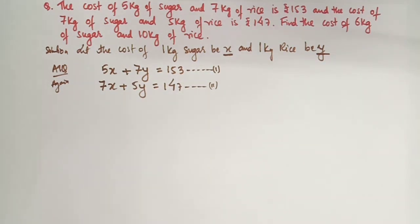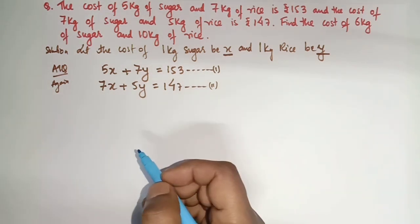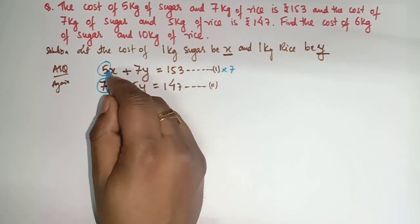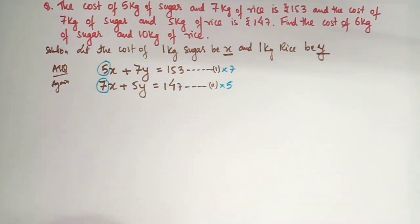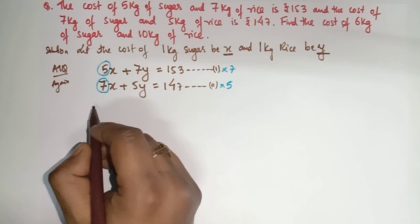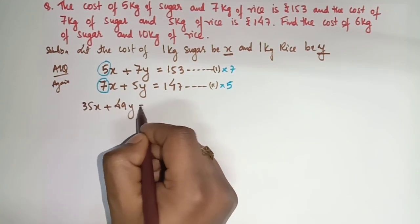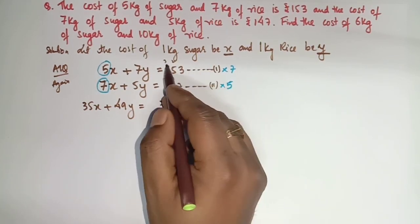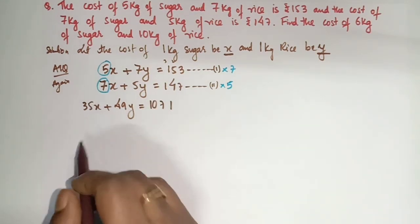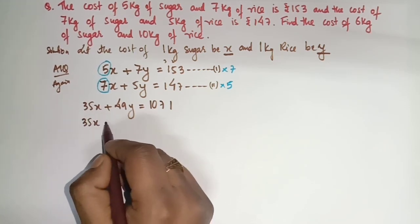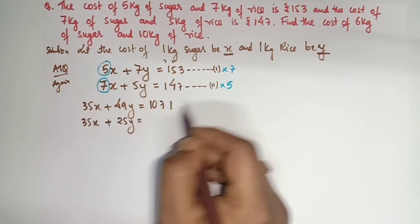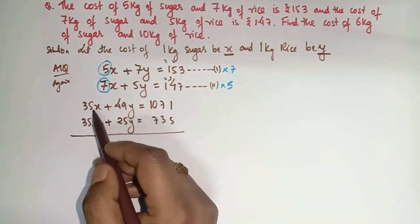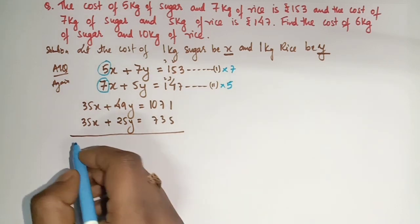Now we will solve by Elimination Method. I will make the x coefficients the same. Here x has coefficient 5 and there it is 7. So multiply Equation 1 by 7 and Equation 2 by 5. That gives: 35x + 49y = 1071 (Equation 1 × 7) and 35x + 25y = 735 (Equation 2 × 5). Since both x coefficients are now 35 and both signs are plus, we need to change the sign of one equation. So the signs of the second equation become minus, and the 35x terms cancel.